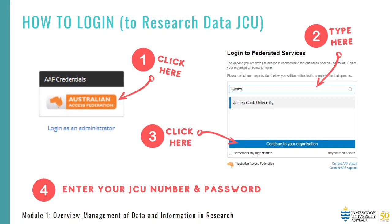It's important to note that entering data into Research Data JCU is easier on larger screen devices, so we recommend using the system on a laptop or desktop computer rather than a mobile phone or tablet. To log into the system, you need to authenticate using the Australian Access Federation login. First, click on the orange Australian Access Federation icon, then type in James Cook University and select it, then click on the blue connect to your organisation icon. You will then need to enter your usual JCU number and password and agree to any terms that may appear. Next time you log in, your details should be remembered.